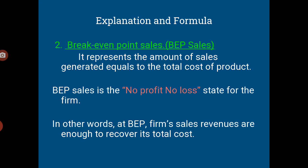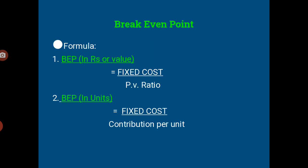The formula for break even point has two versions — in value (rupees) and in units. For break even point in rupees: Fixed Cost divided by PV Ratio. For break even point in units: Fixed Cost divided by Contribution Per Unit. So when finding how many rupees of sales are needed, use Fixed Cost / PV Ratio; when finding how many units to sell, use Fixed Cost / Contribution Per Unit.